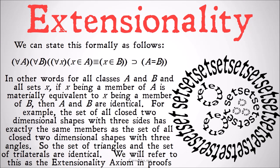We can state this formally as follows. For all A and all B, for all X: X is a member of A if and only if X is a member of B, implies that A is equal to B. So if for any object, any individual, that individual being a member of one of the classes is materially equivalent to that individual being a member of the other class, then those two classes are identical. In other words, for all classes A and B and all sets X, if X being a member of A is materially equivalent to X being a member of B, then A and B are identical.